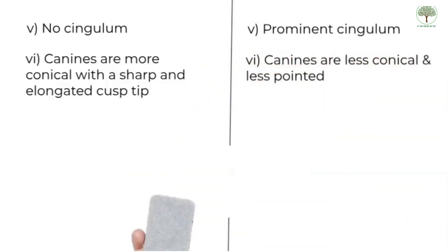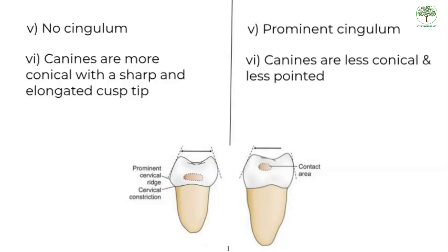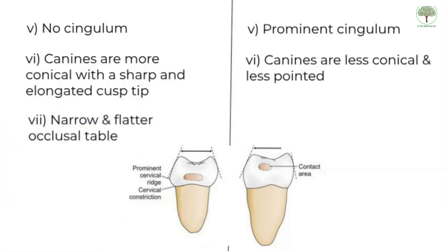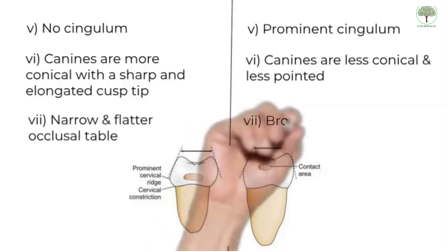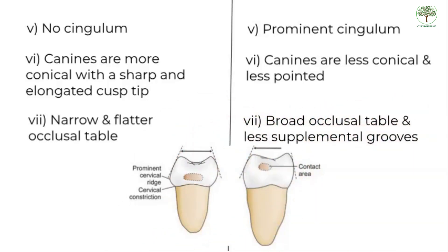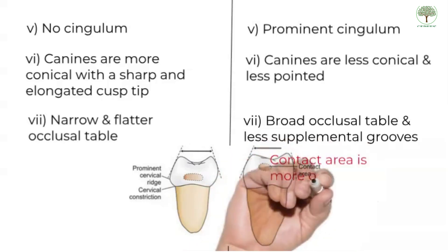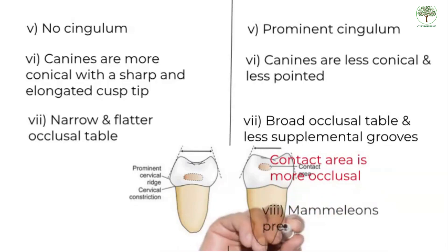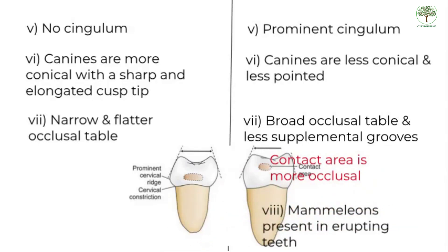Whereas the canines of the permanent dentition have an elongated appearance. The mesial and distal sides taper towards the occlusal table from the contact area markedly, making the occlusal table narrow for the primary dentition. Also note that the contact area is placed more gingivally in the primary dentition. The primary teeth are more upright and show an edge-to-edge relationship in occlusion, whereas the permanent teeth have a slight overjet and overbite during occlusion.